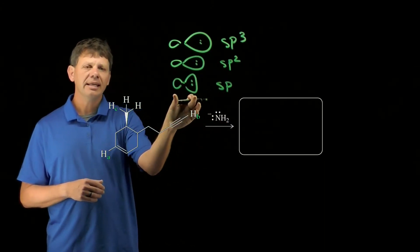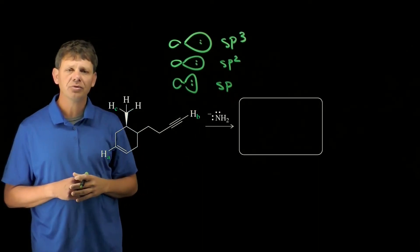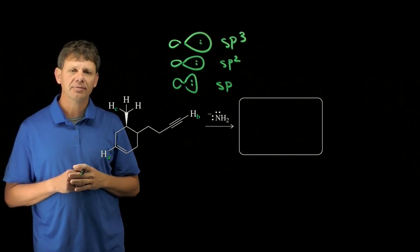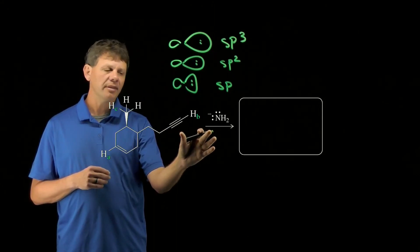A lone pair of electrons in an sp hybridized orbital would be held significantly closer to the more positively charged nucleus. As a result, the most acidic proton is this one here.